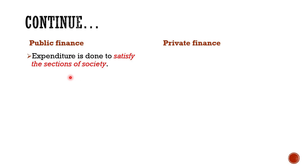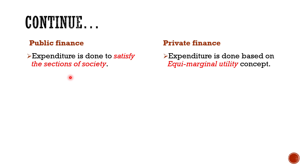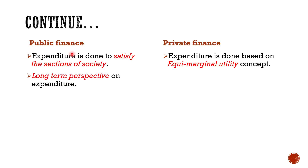Seventh, in private finance expenditure is based on the law of equi-marginal utility — which states that a consumer should spend limited income on different commodities such that the last rupee spent on each commodity yields equal marginal utility, in order to get maximum satisfaction. A private entity spends its income on the basis of this law of equi-marginal utility. For the government, this concept is not necessary because government decides its expenditure based on the needs of society.